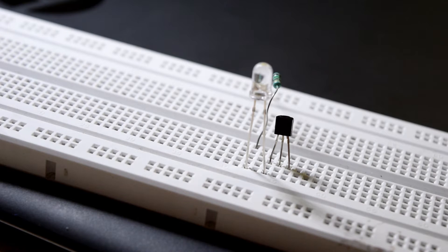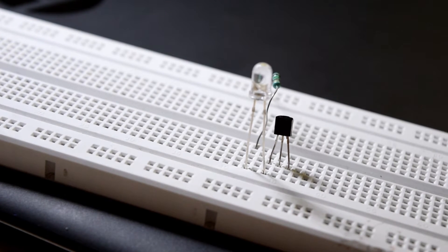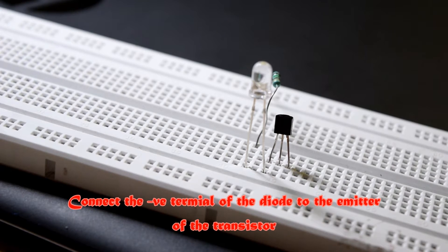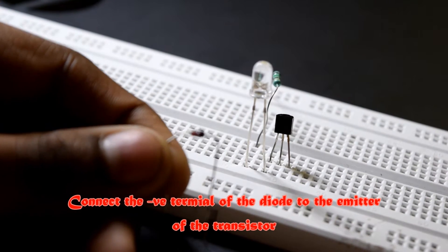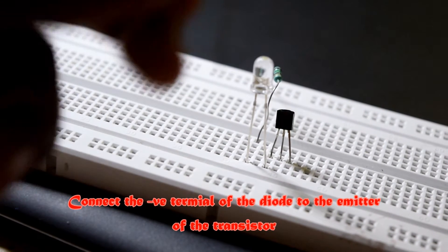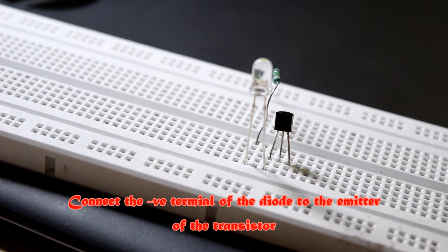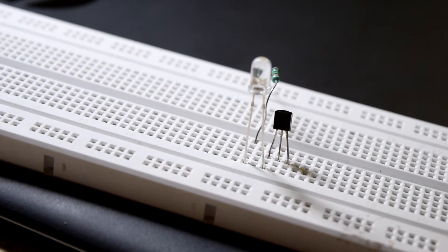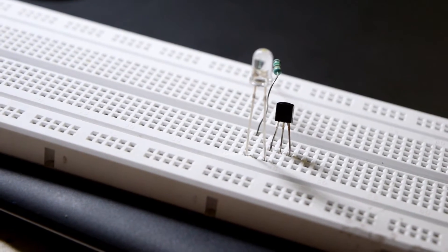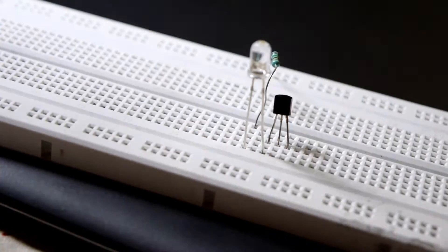Now take your diode and connect its positive terminal, that is not the black one. Black one is the negative terminal and the non-black one is the positive. Connect its negative terminal, that's the black part, to the emitter of the transistor and the positive to any other hole on the breadboard.